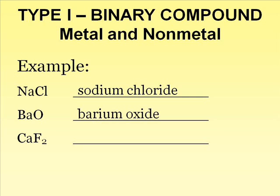The last example, CaF2, has a subscript in the formula. You may recall from the previous chapter that calcium requires two fluorines to accept its valence electrons. But for naming purposes, the subscript is irrelevant in this case. It is still a binary compound composed of two different elements. Its name is calcium fluoride.